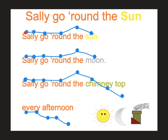So if I sing 'Sally go round the sun,' this is where my voice sounds just a little bit higher. Let's try the second line: 'Sally go round the moon.' 'Sally go round the chimney top' — ooh, here's a spot where my voice goes lower. And this one even starts lower, underneath the words: 'Every afternoon.'